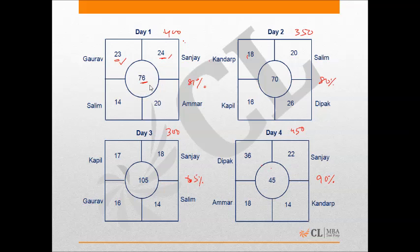The bottom three typists typed 19% of lines, and that figure is 76. On the basis of this we can find the total number of lines typed on day one, which comes out to be 400. Similarly, we can see this for the remaining three figures.